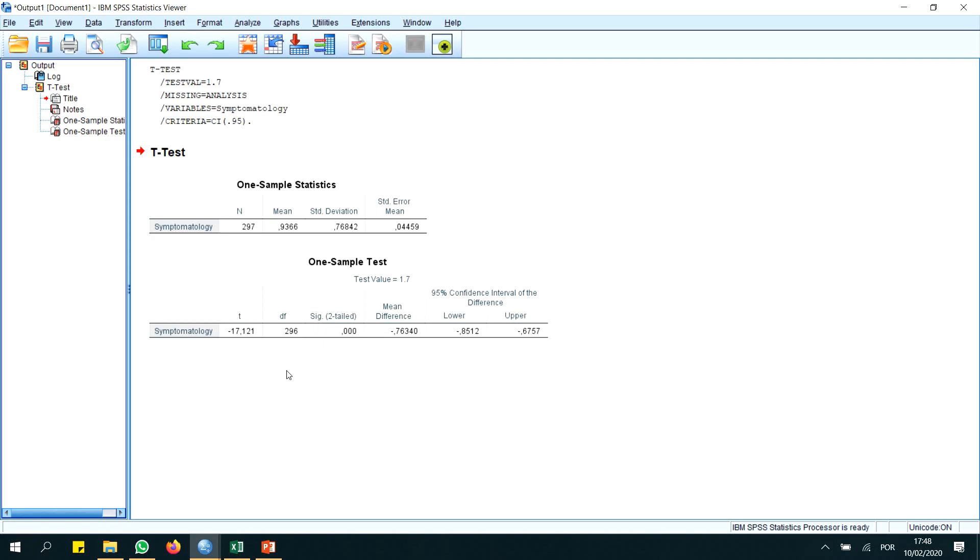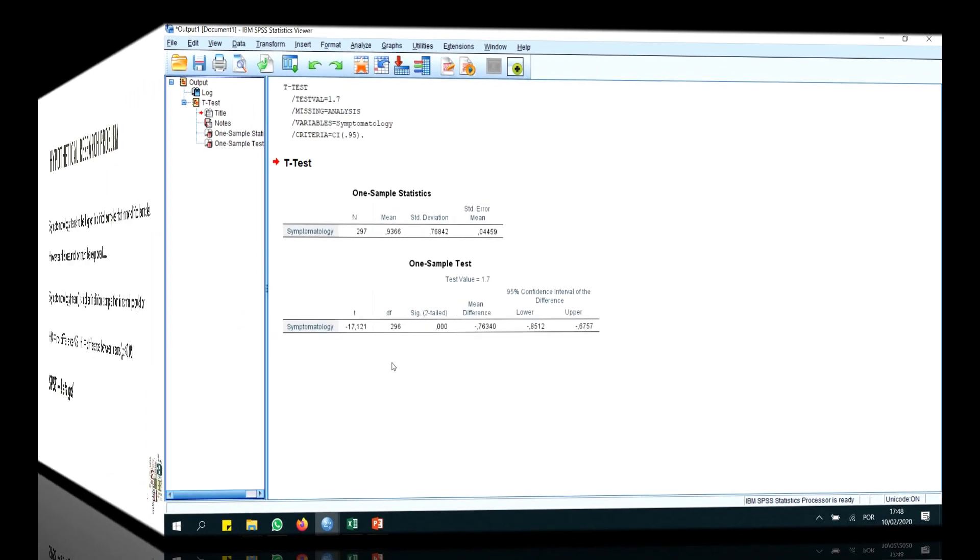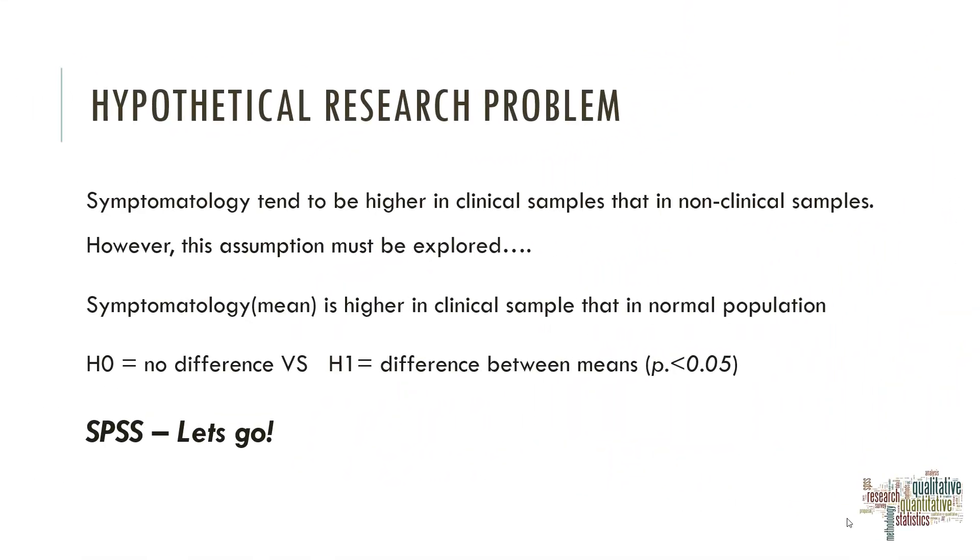Here we have a significant result which means that we can now look to our hypothesis. Symptomatology is higher in clinical sample than in normal population. So, there is a significant difference between the means in our sample and that hypothesized value of 1.7 that it's an hypothetical value for a normal population. We reject the null hypothesis and we accept the H1 hypothesis.